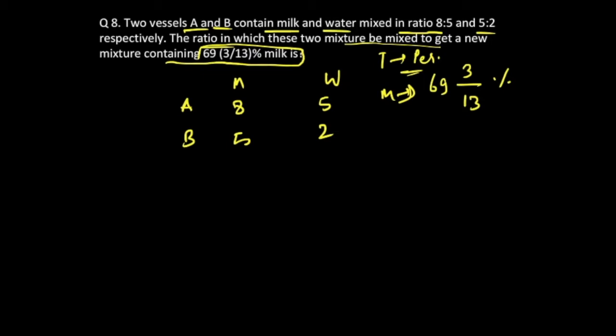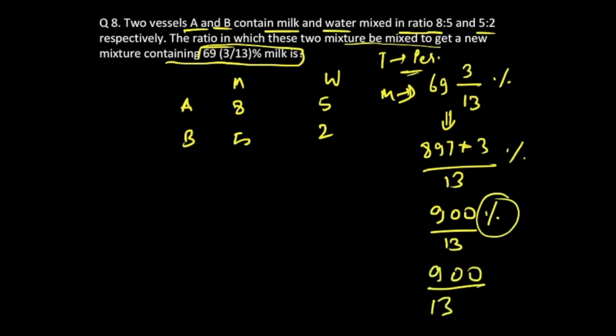So if you solve it, 69 times 3, 13 is 897. Plus if you add this 3, you will get this percentage value which can be written as 900 divided by 13. In order to eliminate this percentage sign, you will divide it by 100, so 1300. This will give you 9 by 13. So this is milk percentage value.